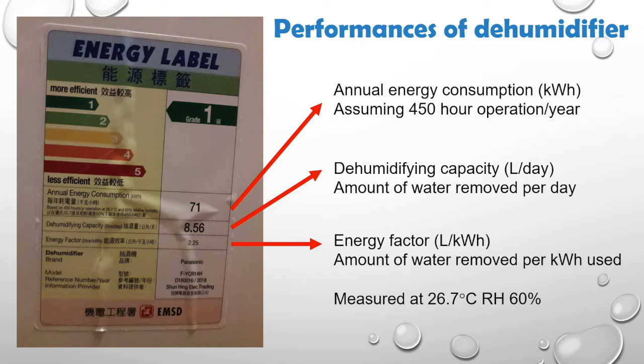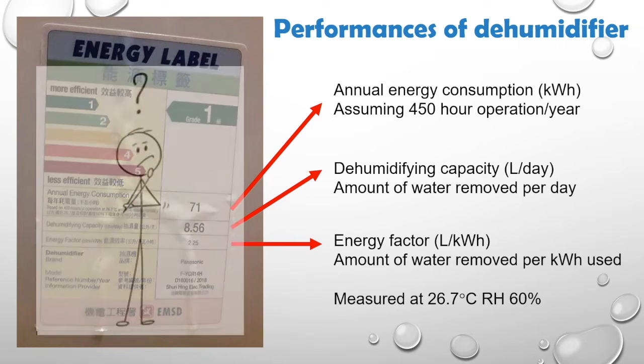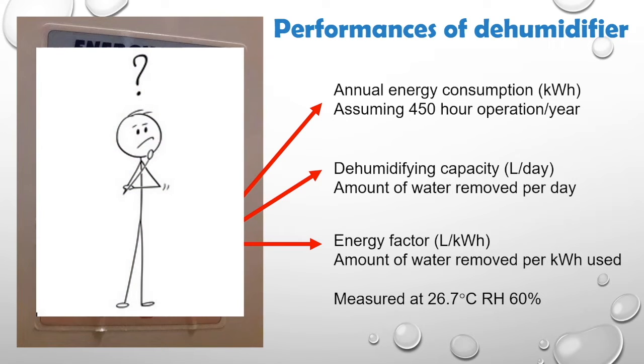The values on the energy labels are measured at 26.7 degrees Celsius with a relative humidity of 60%. So, how can we check to see if the values given on the labels are reasonable or not? To be able to do that, we need to first know the power used by the dehumidifier and also how much water it can remove.